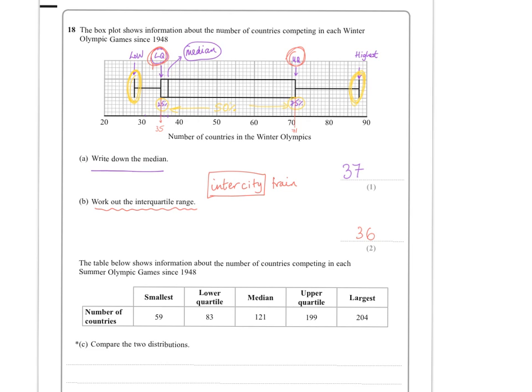Now, the next part of the question is about comparing the two distributions and its quality of written communication again. So you've really got to just look at two things. I always look at two things anyway. And that is I definitely compare the median. And I definitely compare the interquartile range. And I write full sentences when I do that. I don't cut any corners there at all. So the first thing that we can notice here is that the median for the winter games, the one with the diagram shown, is clearly 37. And the median here is 121.